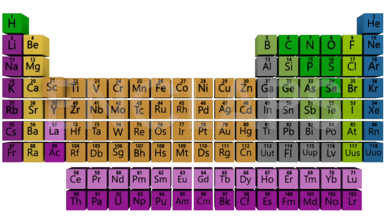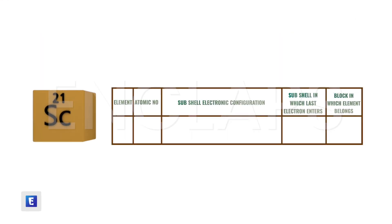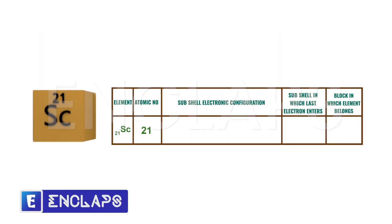Now consider the case of scandium. Scandium has its atomic number 21, so its subshell electronic configuration can be written as 1s2, 2s2, 2p6, 3s2, 3p6, 4s2, 3d1. Here the last electron enters the D subshell. That means scandium belongs to D block in the periodic table.